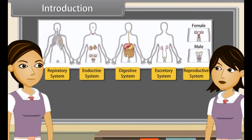Each system is specialised to do a specific function such as nutrition, digestion, respiration, transport of materials, and excretion respectively. In each system all the organs work together so that the whole system can work properly.